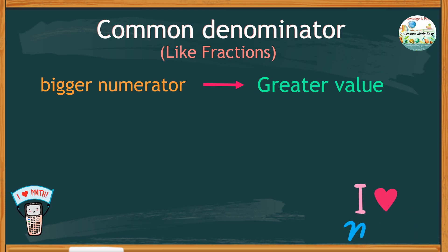Look at this example: 5 over 12 and 7 over 12. Both have a common denominator of 12. But 7 is more than 5. Therefore, 7 over 12 is greater than 5 over 12.